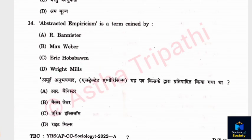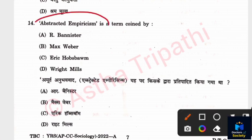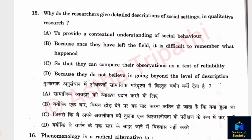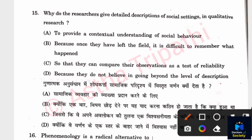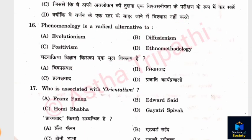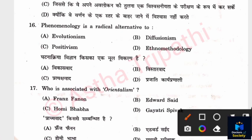Question 14: 'Abstracted Empiricism' is a term coined by whom? Options: R. Bansters, Max Weber, Eric Hobsbawm, C. Wright Mills. The answer is D — C. Wright Mills. Question 15: Why do researchers give detailed descriptions of social settings in qualitative research? The answer is Option A — to provide a contextual understanding of social behavior. Question 16: Phenomenology is a radical alternative to what? The answer is C — Positivism. Do not confuse with Ethnomethodology.